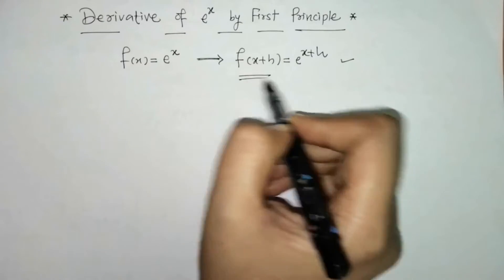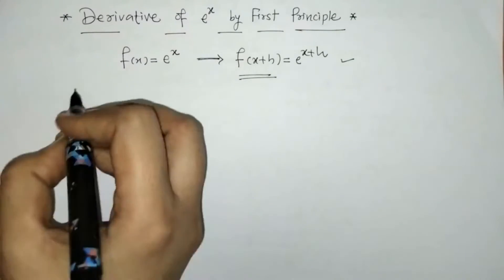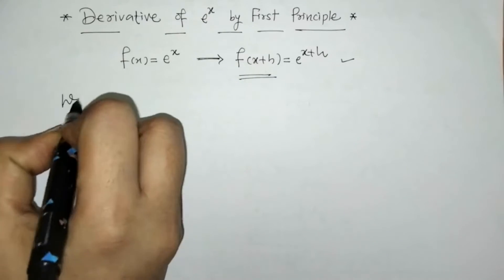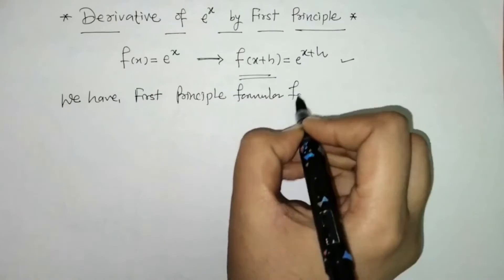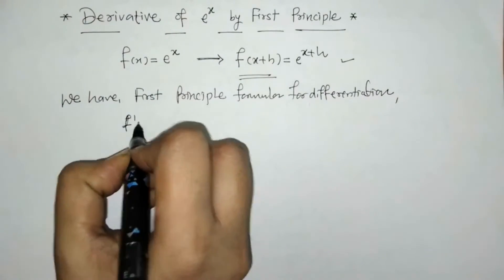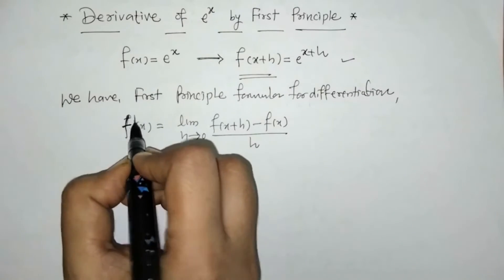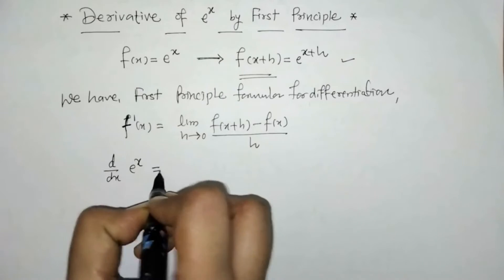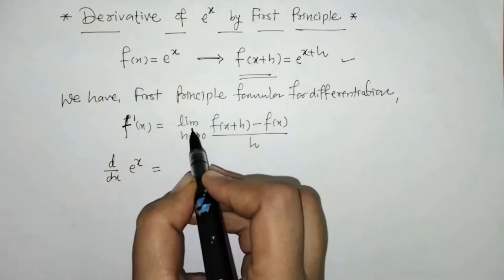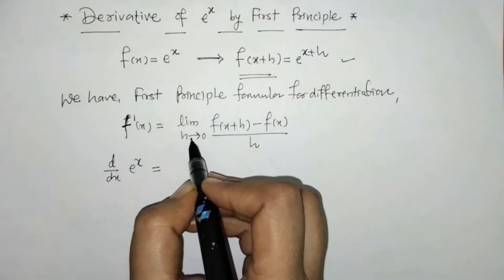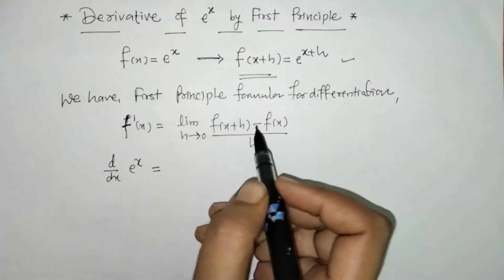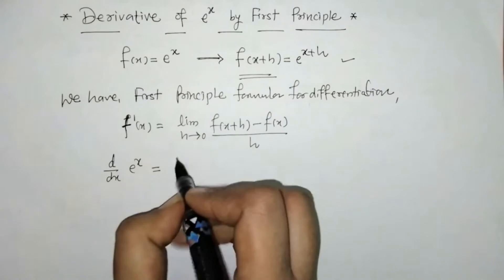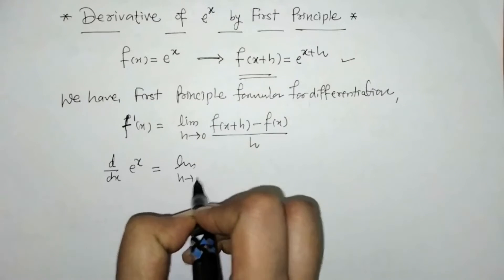We have to use this value in first principle. So what is the first principle? By using this we can find the derivative of e raised to x. The formula is given by the limit as h tends to 0 of f(x + h) minus f(x) upon h, and we have to put this value here.